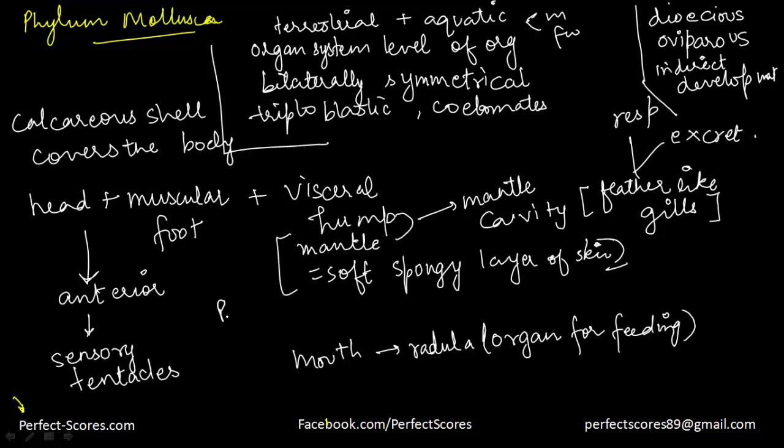Some examples of Phylum Mollusca include Pila, which is the apple snail; Pinctada, which is the pearl oyster; octopus; squid; cuttlefish; tusk shell; and chiton. All of these are examples of Phylum Mollusca.